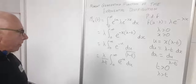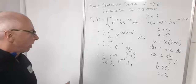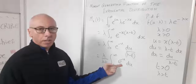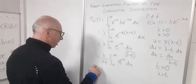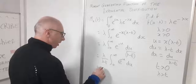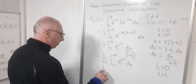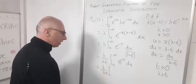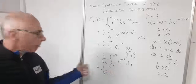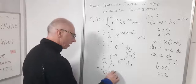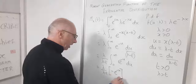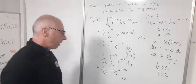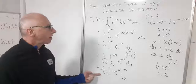Tidying up, we factor (λ − t) out to get λ/(λ − t) times the integral from 0 to ∞ of e^(−u) du. The integral of e^(−u) is straightforwardly −e^(−u), giving us λ/(λ − t) times [−e^(−u)] from 0 to ∞.